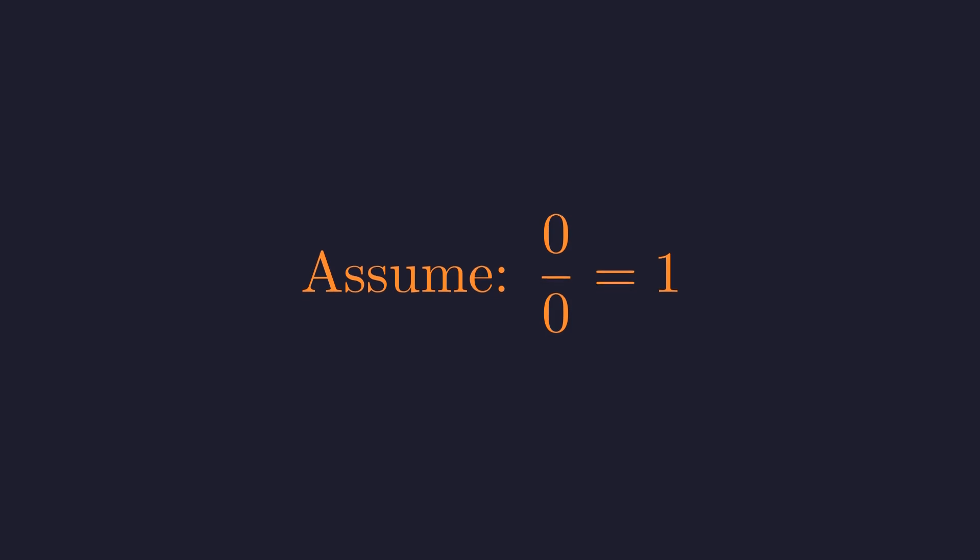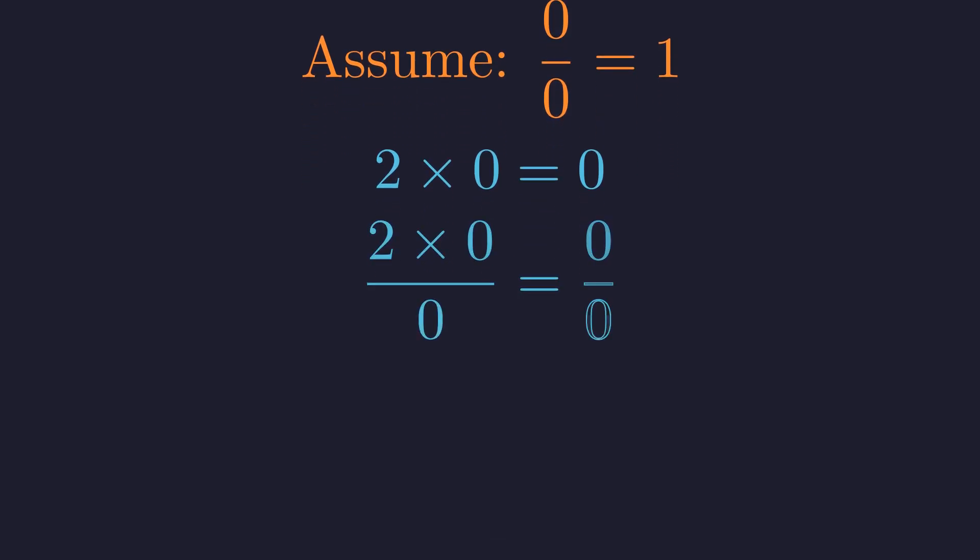No matter what value we pick, we start with an undisputed fact: two times zero is zero. Nobody argues with this. Now we're going to perform an operation that is normally forbidden: dividing both sides by zero. But remember, we just decided to allow this. This gives us the expression: two times zero, all divided by zero, equals zero divided by zero.